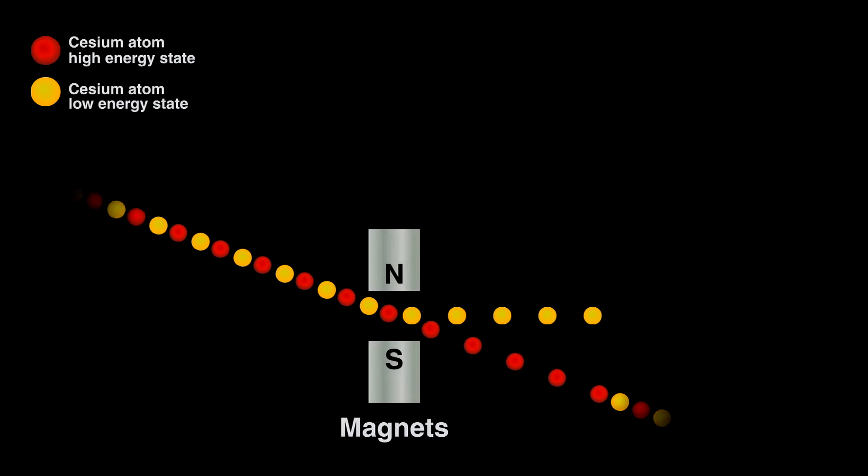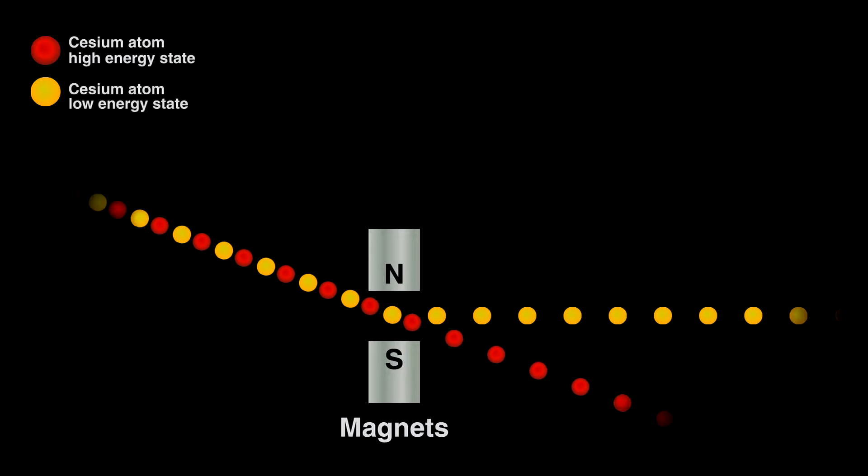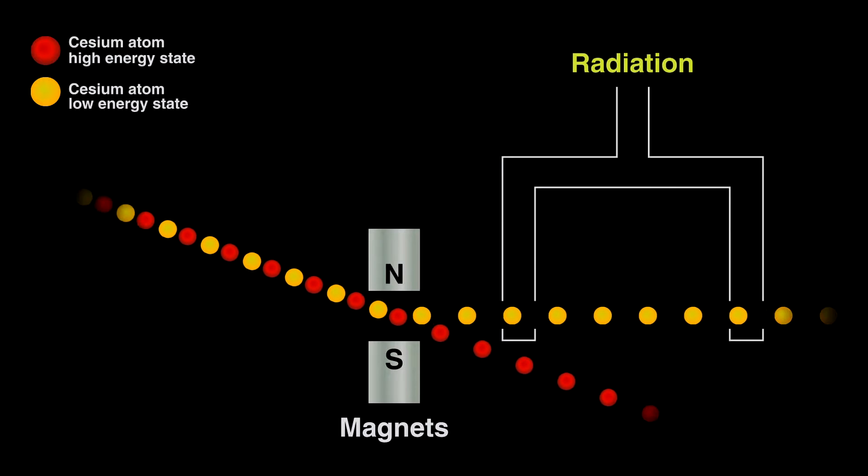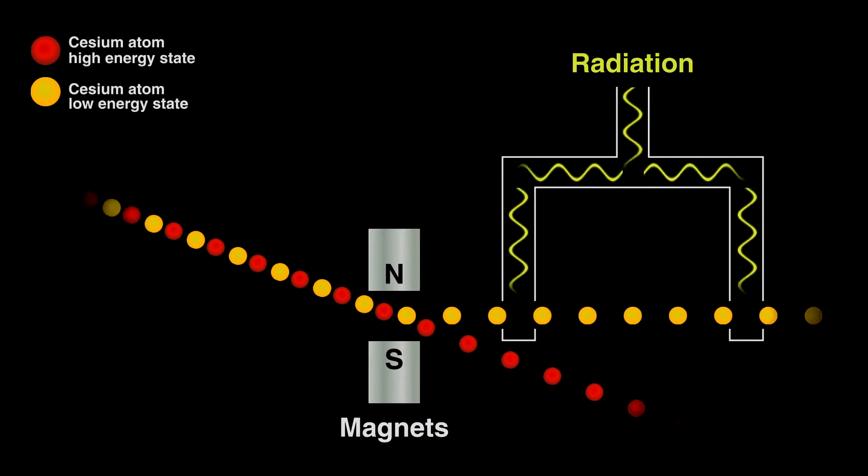One, they can be separated by a magnet, and two, the lower energy atoms can be converted to the higher energy ones if we bombard cesium with the right radiation.